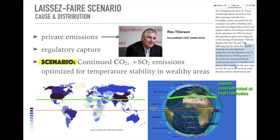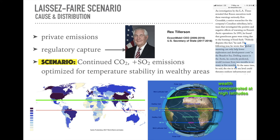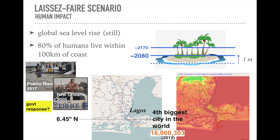That's scenario one: private emissions. The other possibility is regulatory capture — wealthy interests pressuring national governments to do this, possibly by contracting out emissions to private companies anyway. In either case, we continue emitting CO2 and also start emitting SO2 to stabilize temperature specifically in wealthy areas. The problem is wealthy areas are predominantly in the global north. If you look at a globe, the vast majority of earth's wealth is above the equatorial line. The reason is colonialism — a net wealth flux from lower latitudes to higher latitudes. So the way we'd optimize SO2 emissions would be devastating to equatorial regions, and it would not address the major problems of climate change: sea level rise, decreasing biodiversity, ocean acidification.